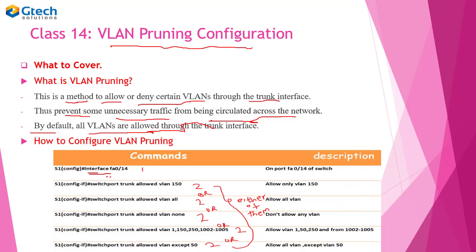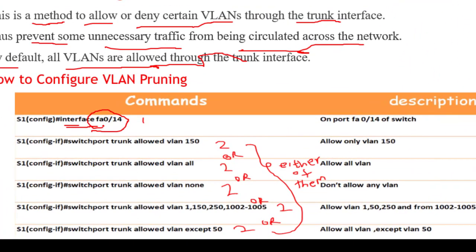Let's assume this is our trunk interface, FA0/14. We have enabled it to be a trunk interface. Let's configure VLAN pruning on this interface. We have several rules we can use. The first rule is: switchport trunk allowed VLAN 150. This rule simply means only VLAN 150 is allowed through the trunk interface.